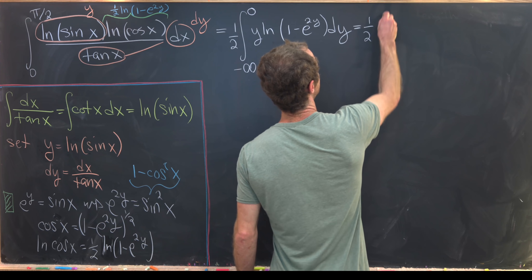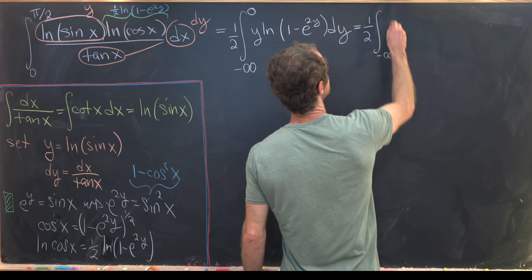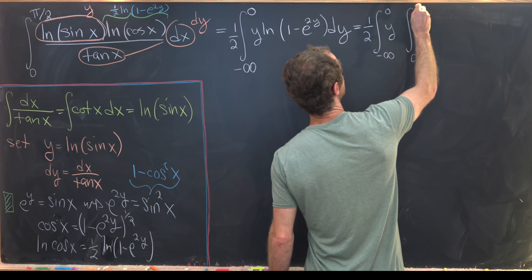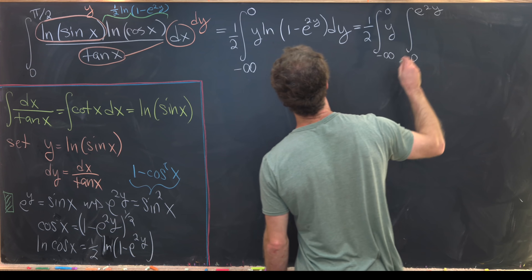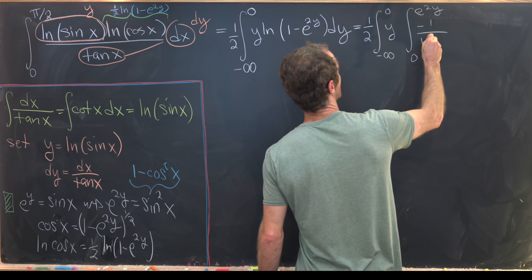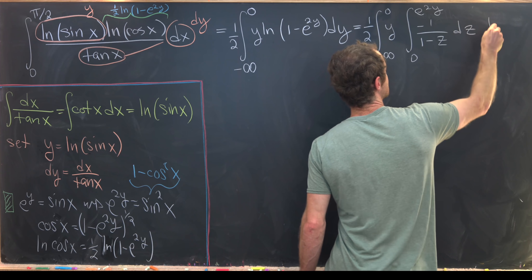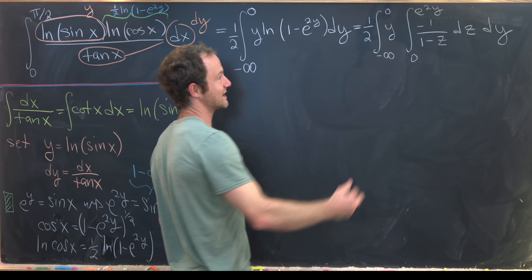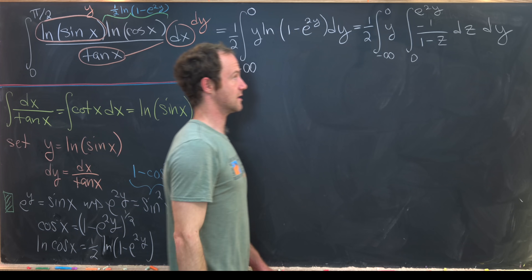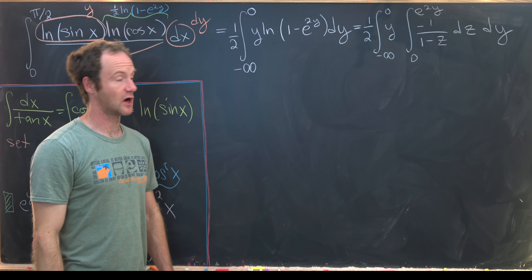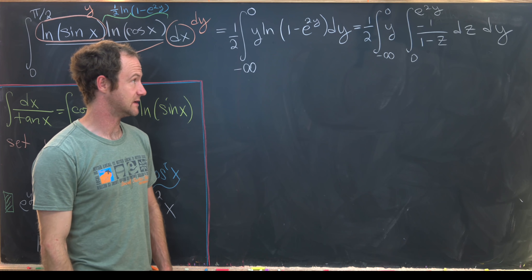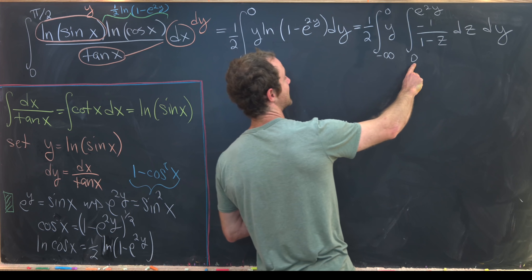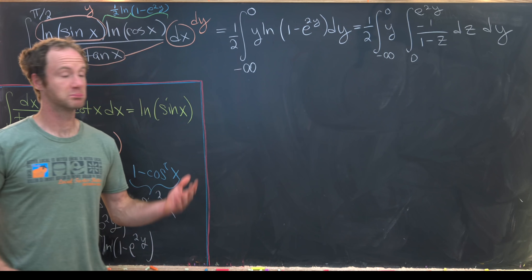We write one-half times the integral from −∞ to 0 of y, times the integral from 0 up to e^(2y) of −1/(1 − z) dz dy. Taking the antiderivative of −1/(1 − z) gives ln(1 − z), evaluated at e^(2y) gives the ln term we want, and evaluated at 0 gives 0. So that representation is correct.